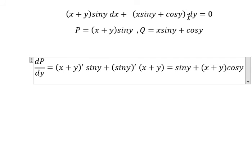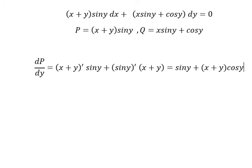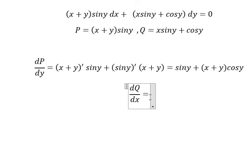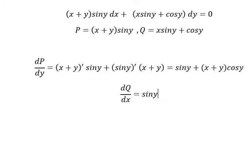Next, since this term involves dy, we take the partial derivative of Q with respect to x. This term has only x, so that gives 1; the other term has no x, so you get 0. The result is sin(y). Since the two partial derivatives are not equal, we need to transform this into an exact equation.